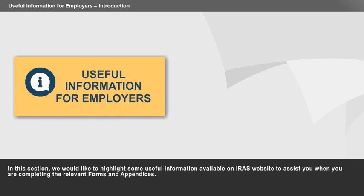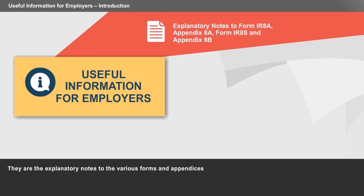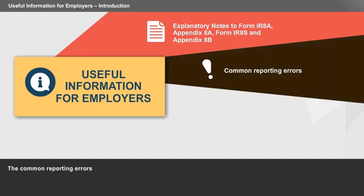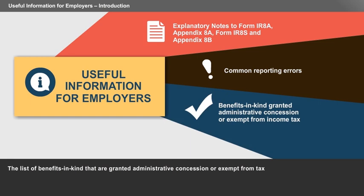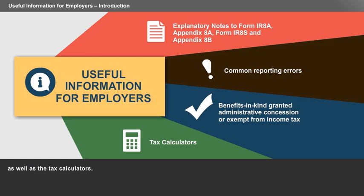In this section, we would like to highlight some useful information available on IRAS's website to assist you when completing the relevant forms and appendices. They are the explanatory notes to the various forms and appendices, the common reporting errors, the list of benefits in kind that are granted administrative concessioned or exempt from tax, as well as the tax calculators.